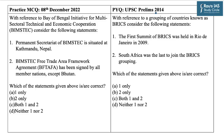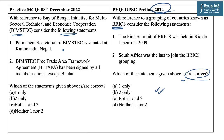UPSC in 2014 asked a question on BRICS, where you have to identify the correct statements. You can pause this video and try to solve it. On similar lines, we have designed one practice MCQ on BIMSTEC: with reference to BIMSTEC, consider the following statements. Statement 1 says the permanent secretariat of BIMSTEC is situated at Kathmandu in Nepal. Statement 2 says the BIMSTEC Free Trade Area Framework Agreement has been signed by all members except Bhutan.